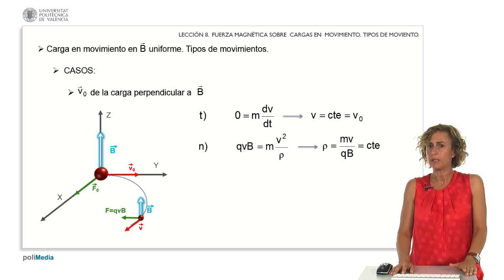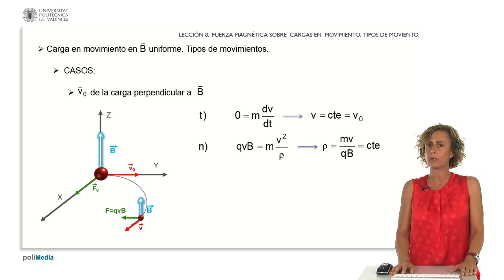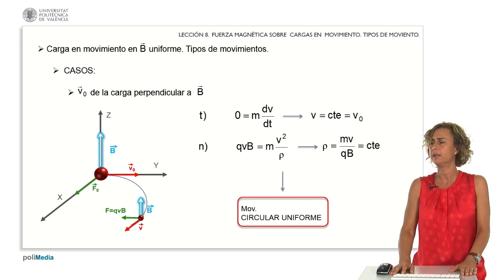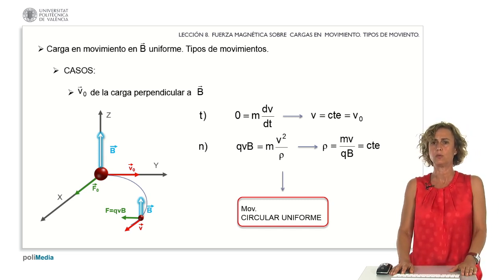Given that all velocity, magnetic field, mass, and charge are constant, the radius of curvature remains constant as well. Consequently, the particle will undergo a motion that's both uniform and circular.